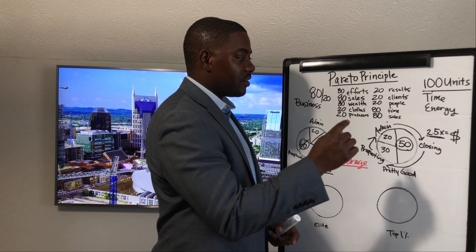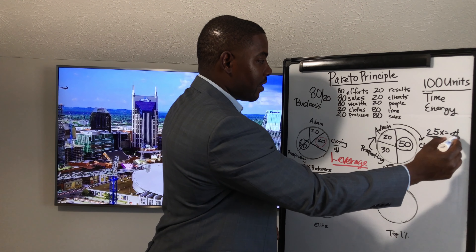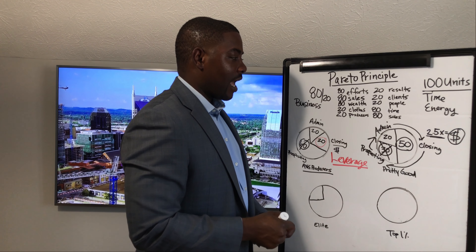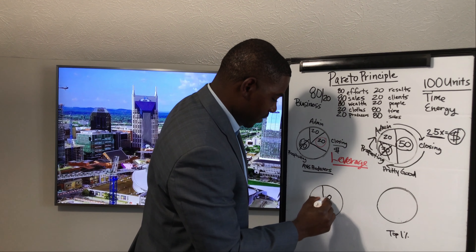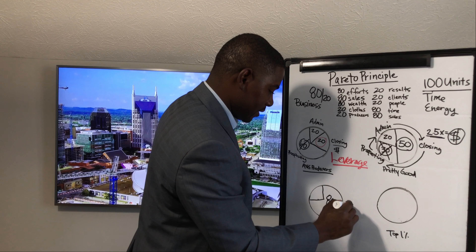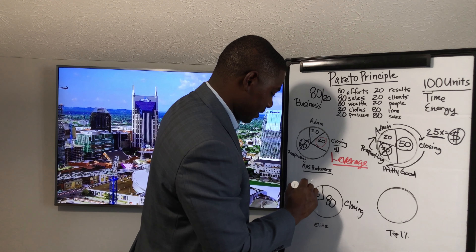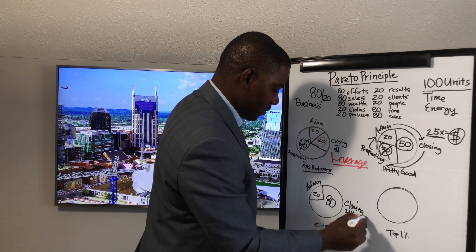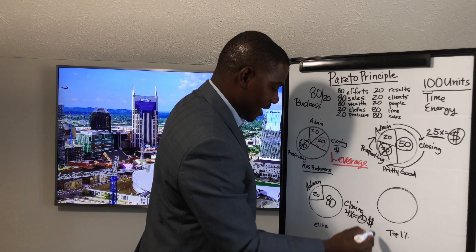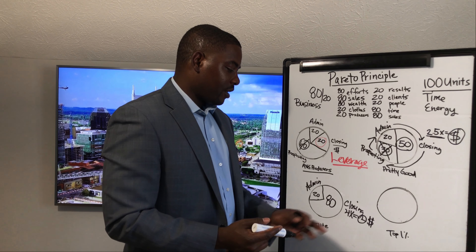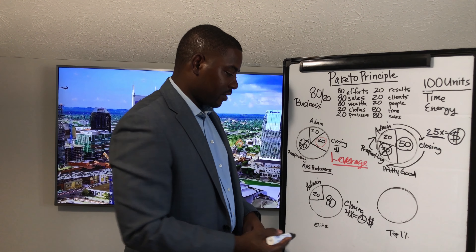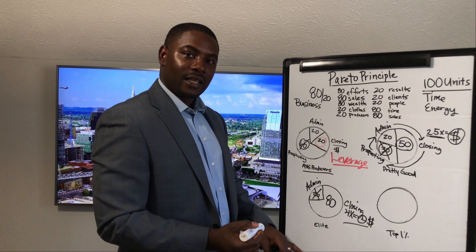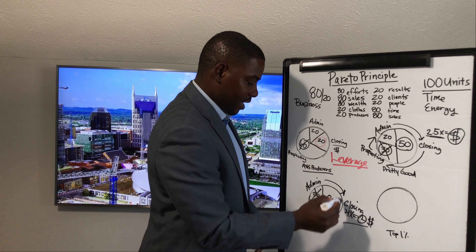We want to repeat this process over and over. Now that we're spending 50 units of time closing — two and a half times what we were doing before — we can leverage that money to hire someone to do more of the prospecting. That allows us to spend 80 units of time closing and 20% on admin. We've 4x'd our time and money. At that point, could you hire someone to do your admin too? For sure you could.